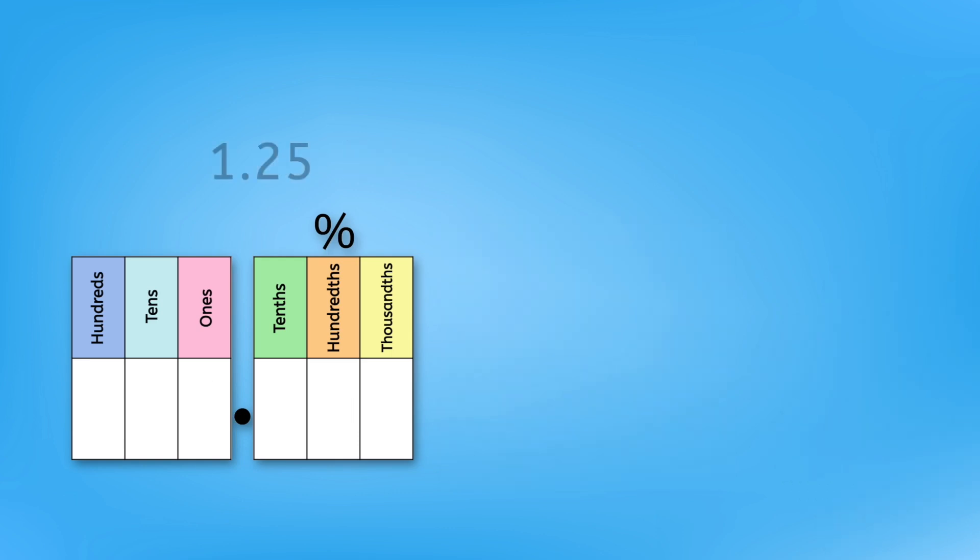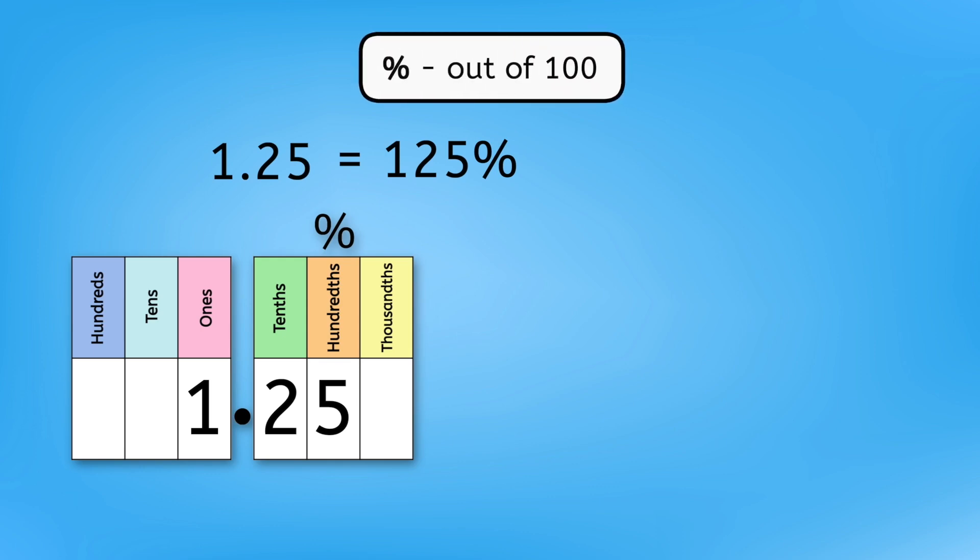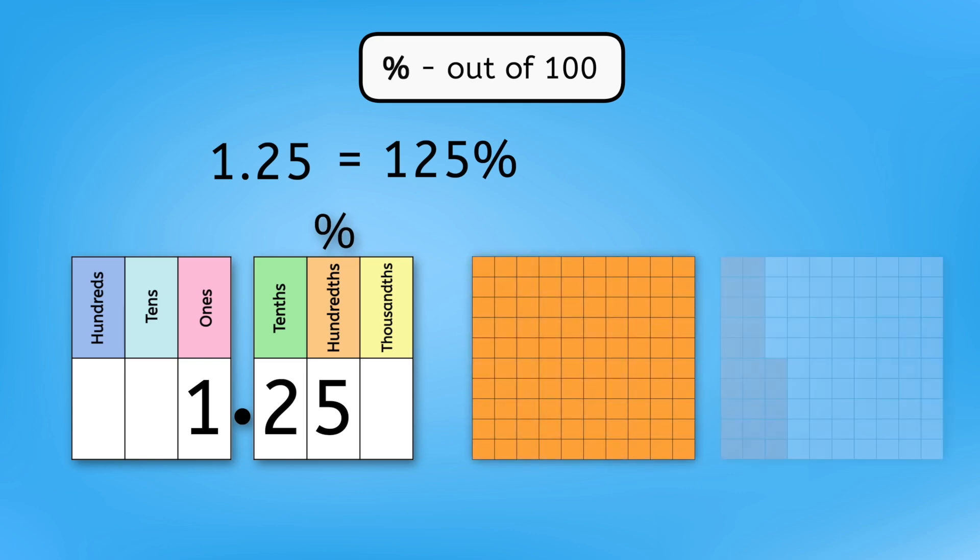So what about one and 25 hundredths? Filling in the digits in the place value chart shows us the percentage one hundred twenty-five percent. But percentages are out of one hundred, so can we have more than one hundred? We can. Similar to improper fractions, percentages greater than one hundred percent represent having one hundred percent of something plus another percentage of another whole. In this case, another twenty-five percent.